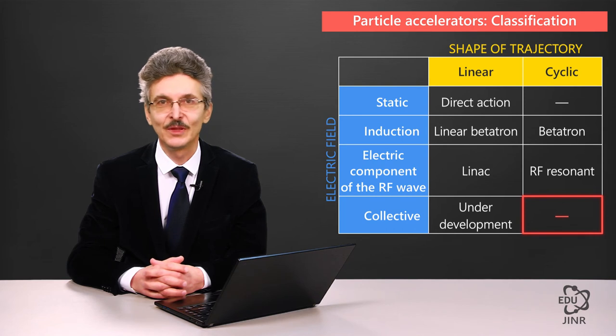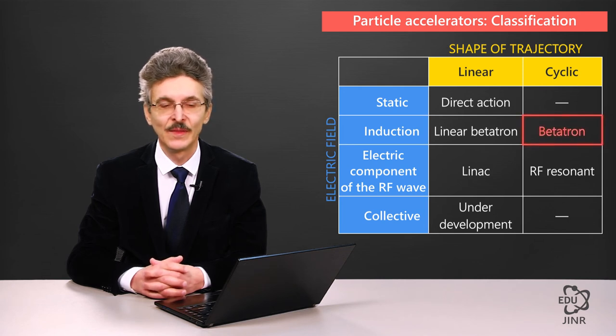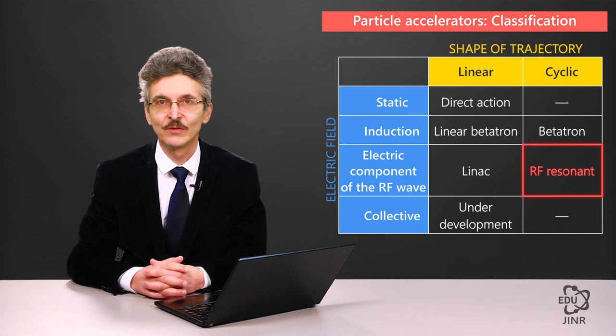And therefore, to date, there have not been any suggestions to use collective fields for particle acceleration in cyclic accelerators. Respectively, there are only two types of cyclic accelerators. An induction cyclic accelerator, also referred to as a betatron, and an RF resonant accelerator.